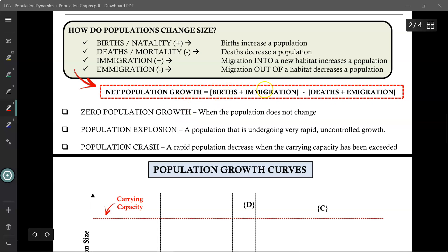So, births and immigration will add to your population, while deaths and emigration will reduce your population. If you have more here than here, then overall you have a positive net growth. If you lose more than you gain, then overall you'll have a negative net growth.